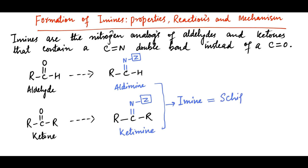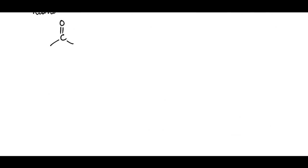Imines are also called Schiff bases, named after Hugo Schiff, a German chemist who first described their formation. For example, this carbonyl, which can be aldehyde or ketone, reacts with ammonia derivative, denoted here as NH2Z, in the presence of acid catalyst, denoted as HA, to form imine.